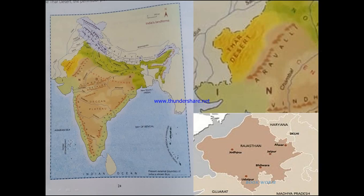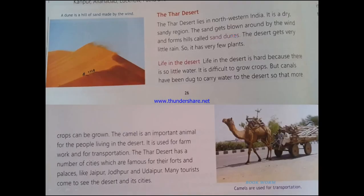In this map you can see this region, which I have zoomed out for you — situated in Rajasthan. This is the desert region of India, and this desert is known as the Thar Desert. The Thar Desert lies in northwestern India; it is a dry, sandy region.